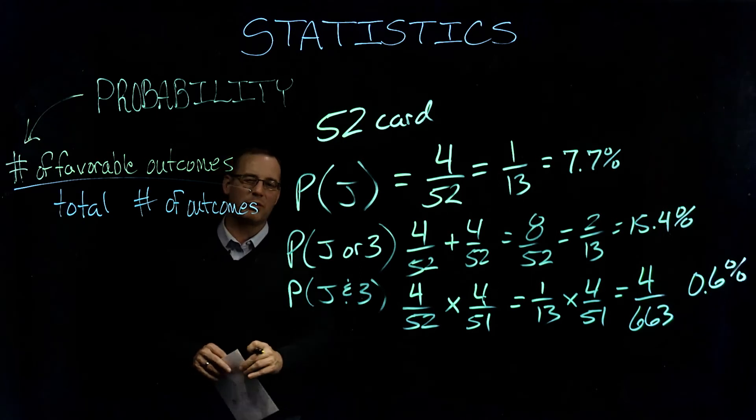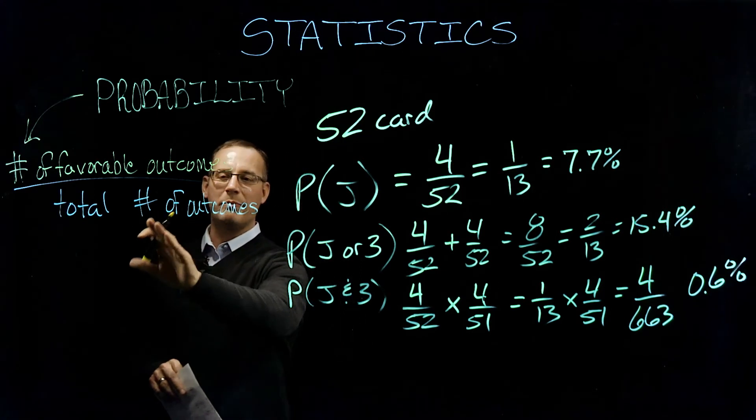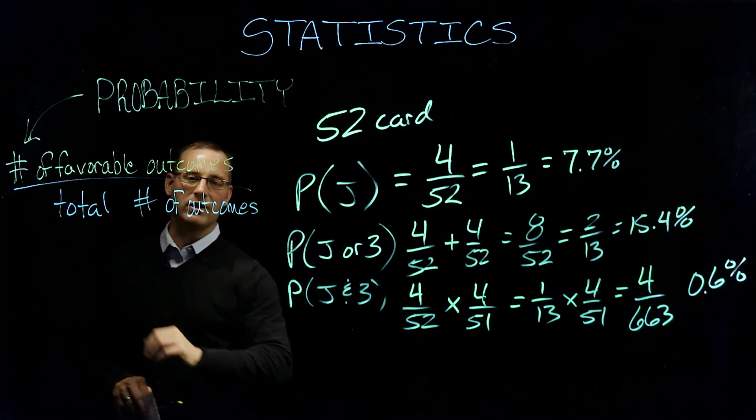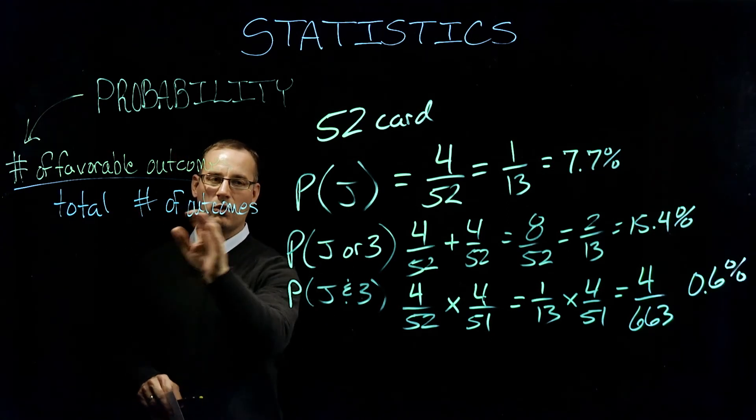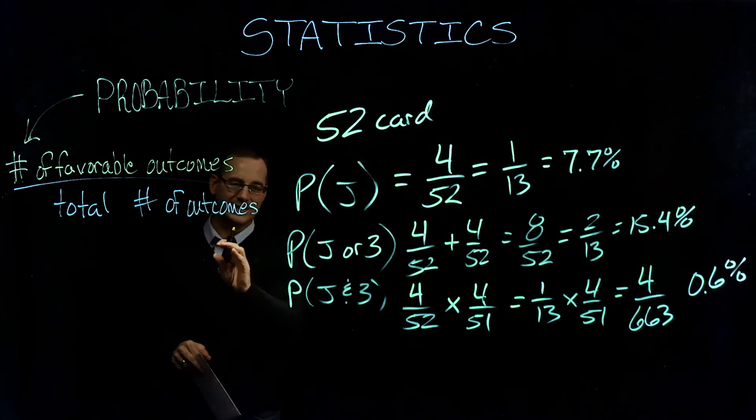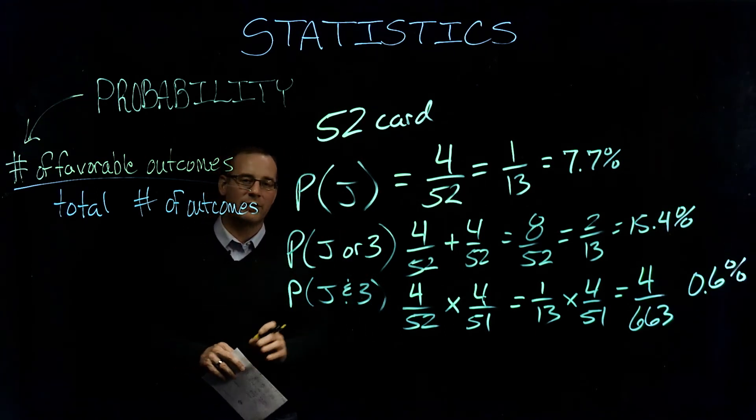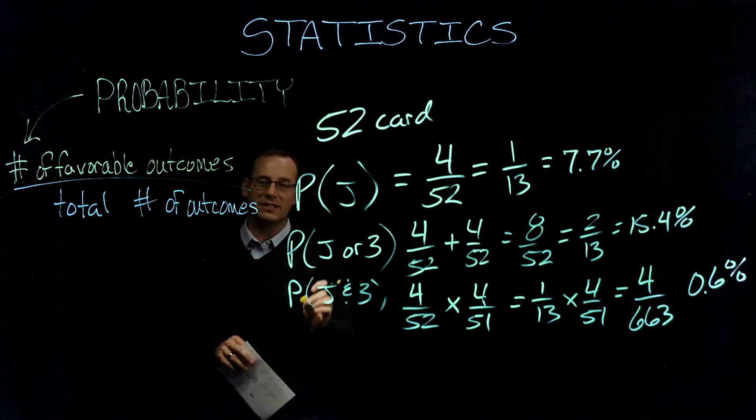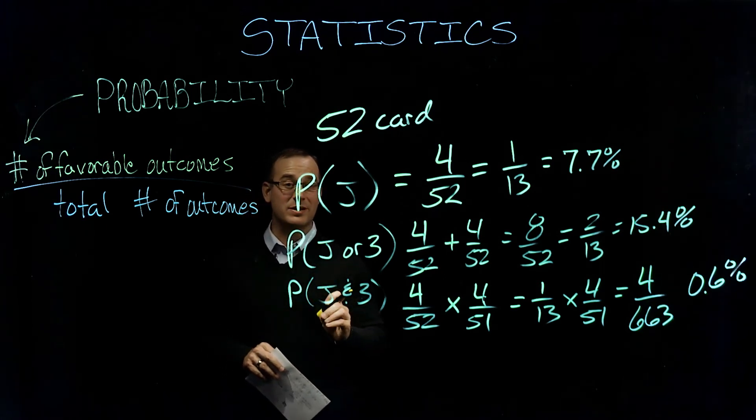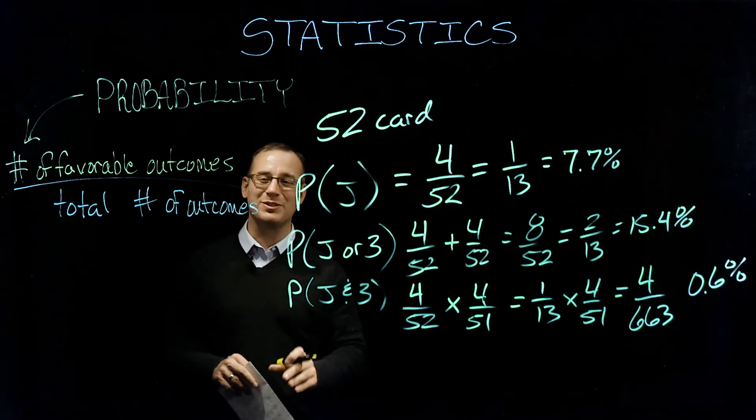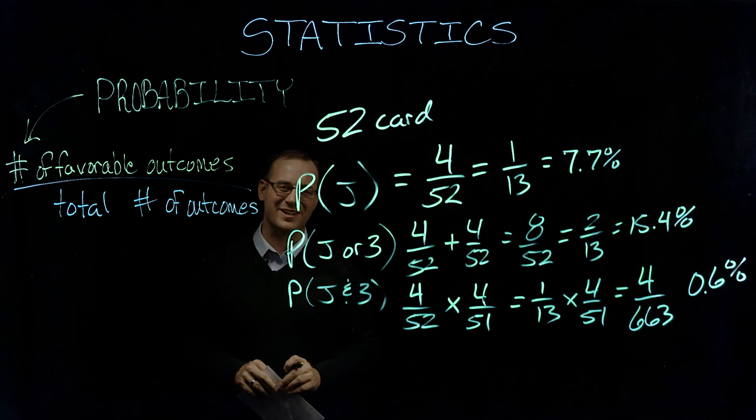So there's just a few simple examples of how we would calculate probability. And any time that we calculate probability, remember, always go back to your initial formula here: the number of favorable outcomes divided by the total number of outcomes. And if you stick to that formula, you should be able to walk through and calculate the probability for any problem. In the next video, we'll go a little bit deeper into more complex examples, but we're still going to be working with our same formula. See you next time.